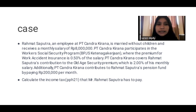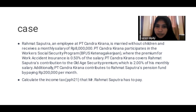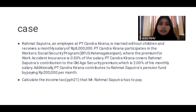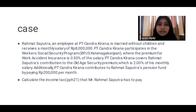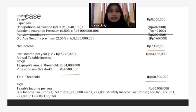Mr. Rahmat Saputra is an employee at PT Chandra Kirana. He is married without children, with a monthly salary of 8 million rupiah. He participates in worker social security BPJS. The premium for work accident insurance is 0.50% of salary. His company covers all of Rahmat Saputra's security premiums, which is 2.00% of his monthly salary, and also pays a pension fund contribution of 200,000 rupiah per month. So let's calculate the income tax for Mr. Rahmat.